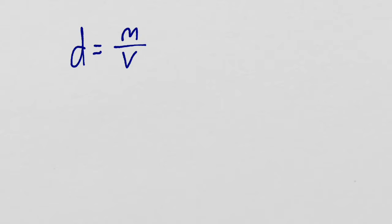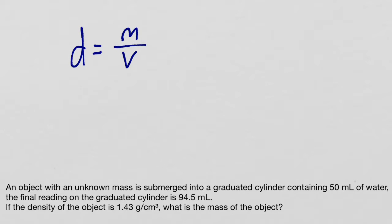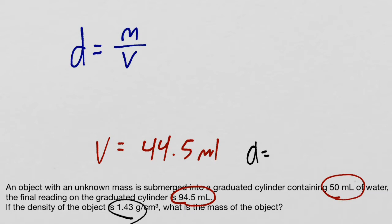Let's imagine that we have a problem - in fact, let's just use the problem we did the first time. In this problem we knew the volume of our object was the difference between the starting amount of 50 and the final amount of 94. So we knew that the volume was equal to 44.5, and we also knew that the density was equal to this amount: 1.43 grams per mil.